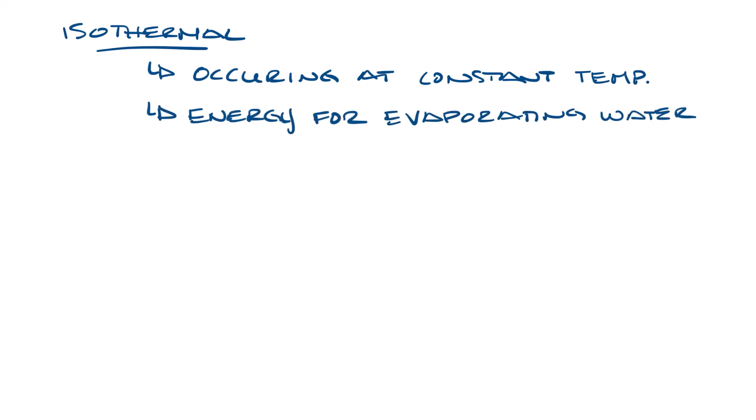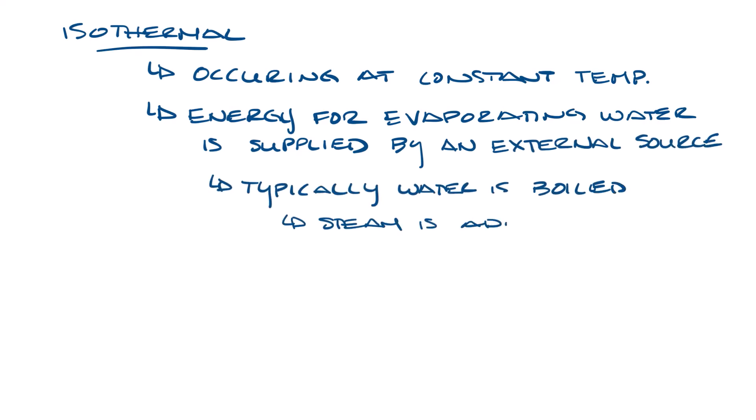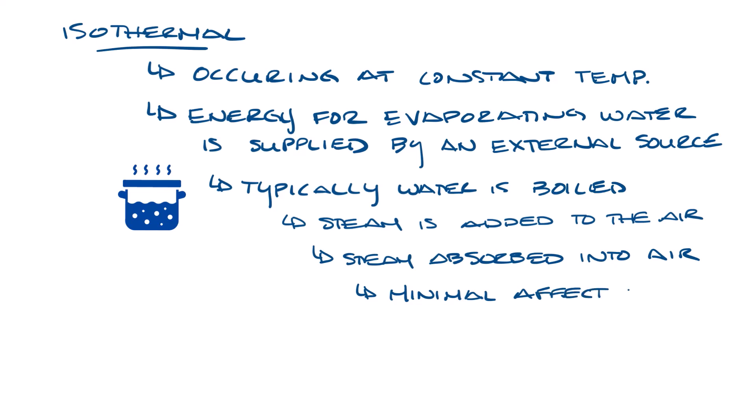In the isothermal process, the energy for evaporating the water is supplied by an external source. Typically, the water is boiled and the resulting steam is added to the air. When the steam is absorbed into the air, it has a minimal effect on the air temperature, but it does raise the relative humidity.